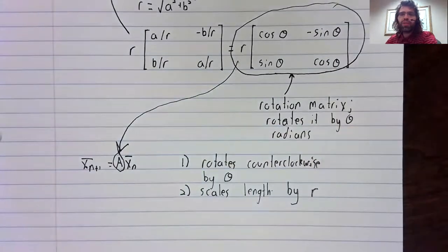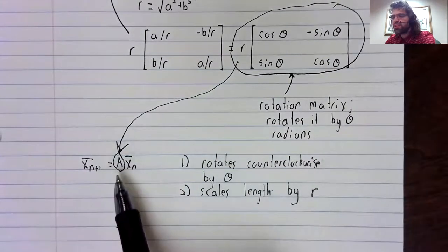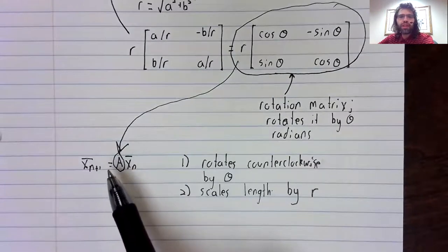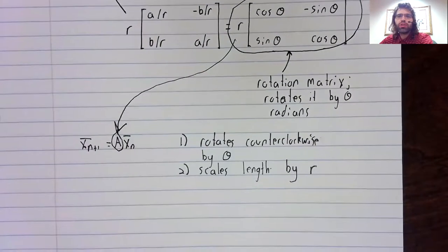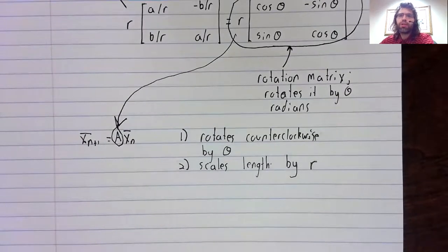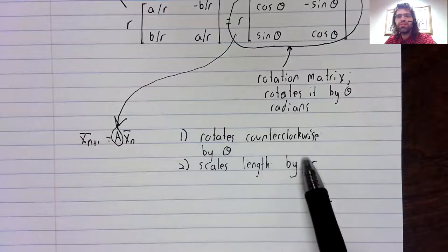So, as time passes, and we repeatedly multiply by this matrix, we are going to repeatedly rotate, and we're going to repeatedly scale.